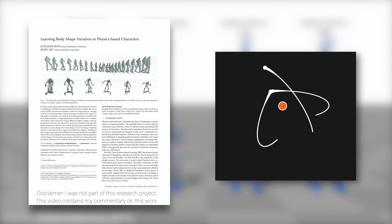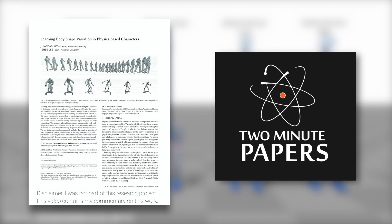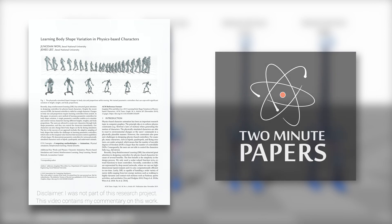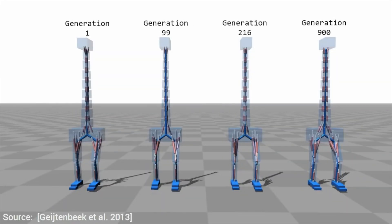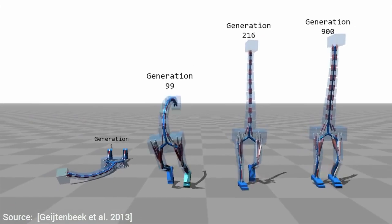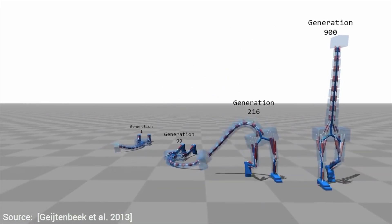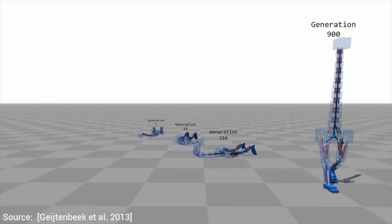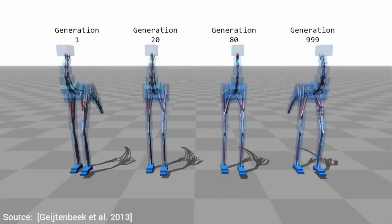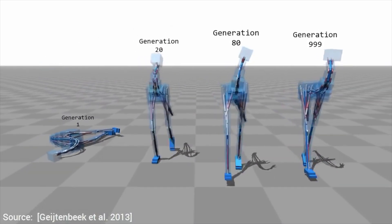Dear Fellow Scholars, this is Two Minute Papers with Dr. Károly Zsolnai-Fehér. This glorious paper from about seven years ago was about teaching digital creatures to walk. The numbers here showcase the process of learning over time, and it is clear that the later generations did much better than the earlier ones.